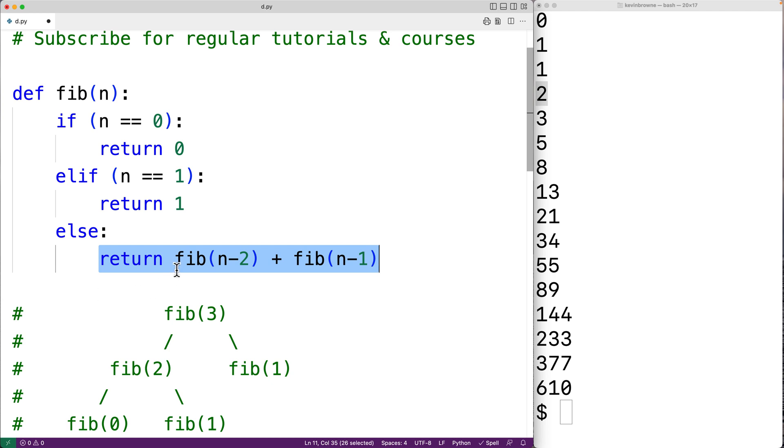Now because we have two recursive function calls here, we can call this binary recursion or we can call it multiple recursion or we can call it tree recursion.